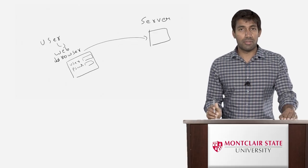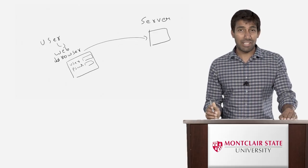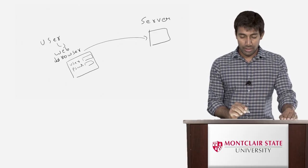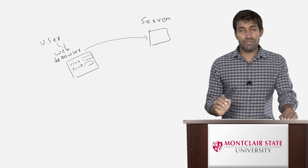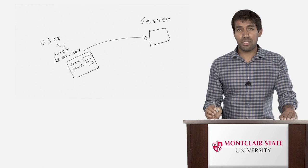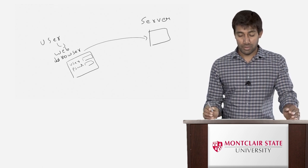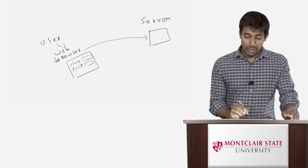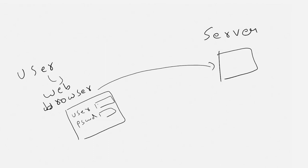One of the common ways of doing SQL injection is to enter something in the user and password field that is always correct. For example, in the user field you can enter something like 1 equal to 1, and similarly in the password you can enter 1 equal to 1.